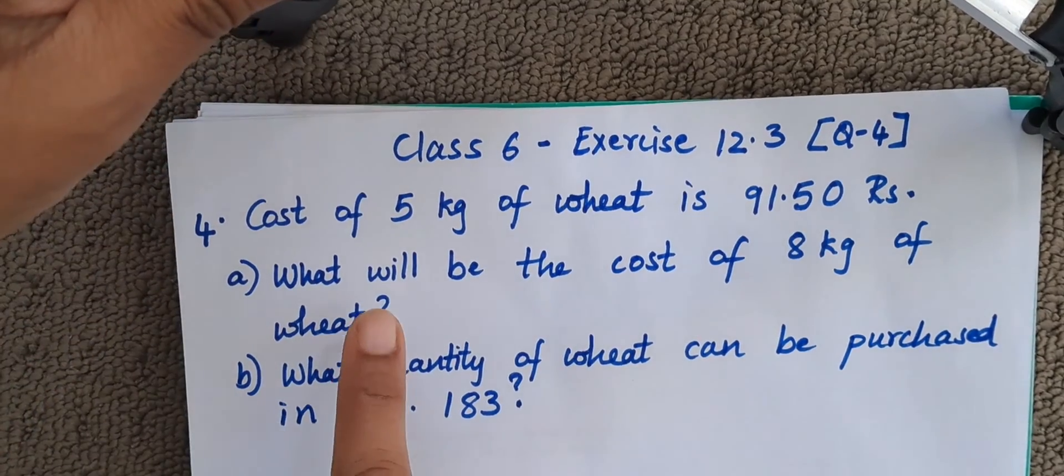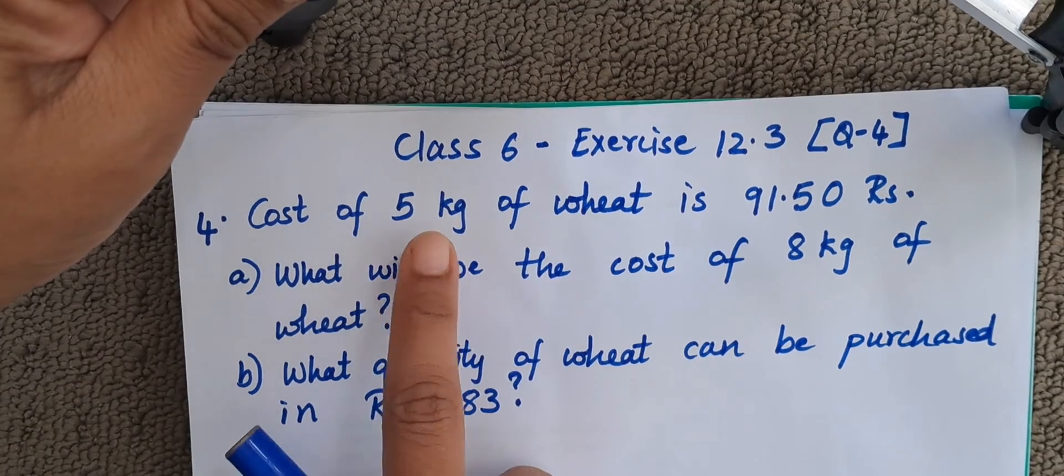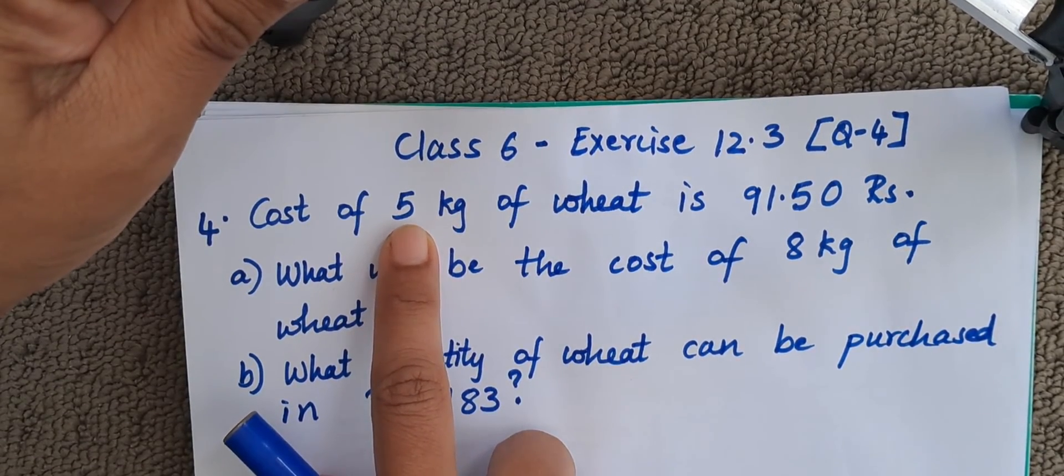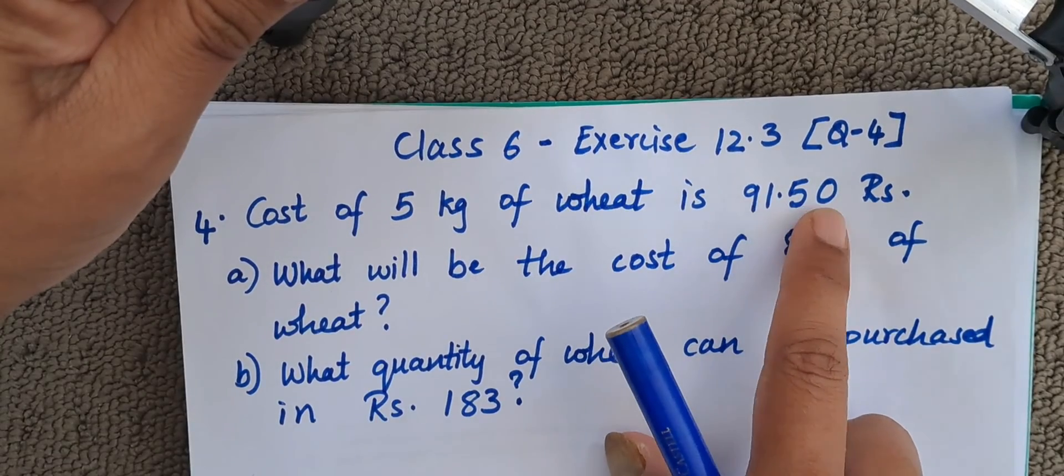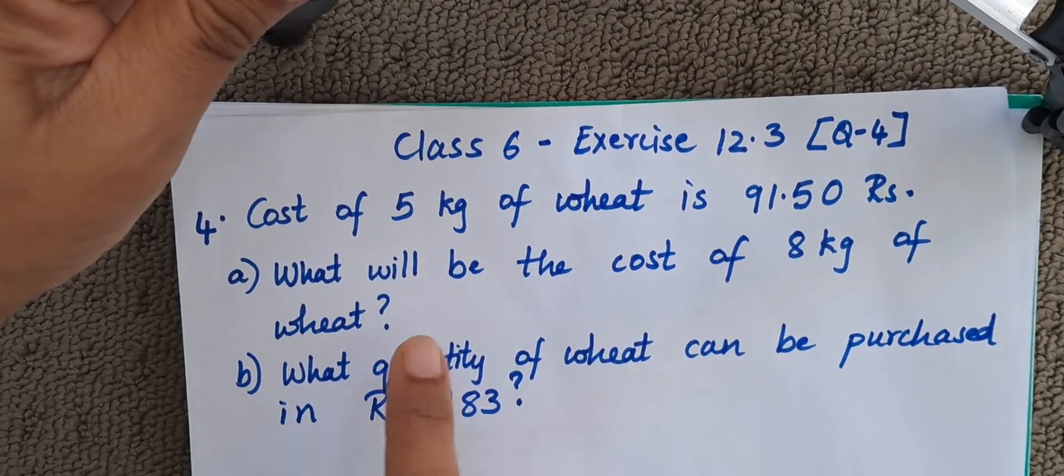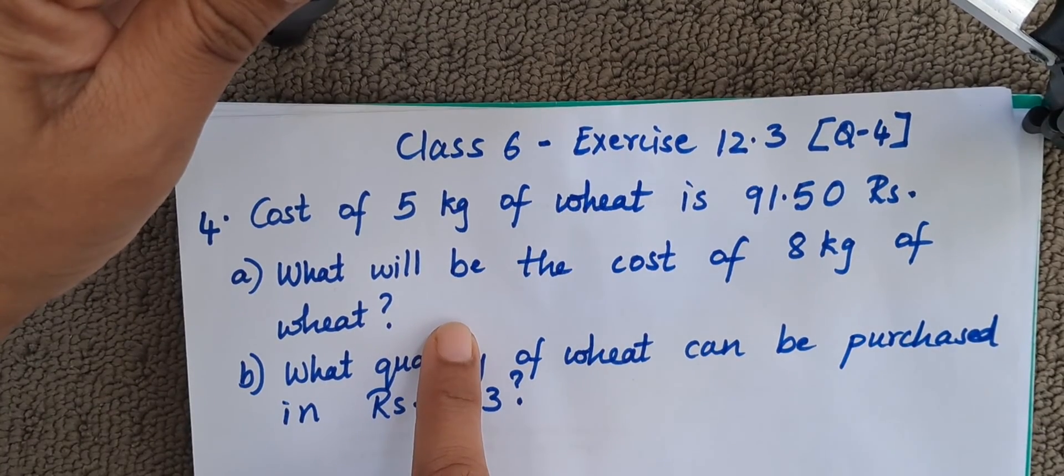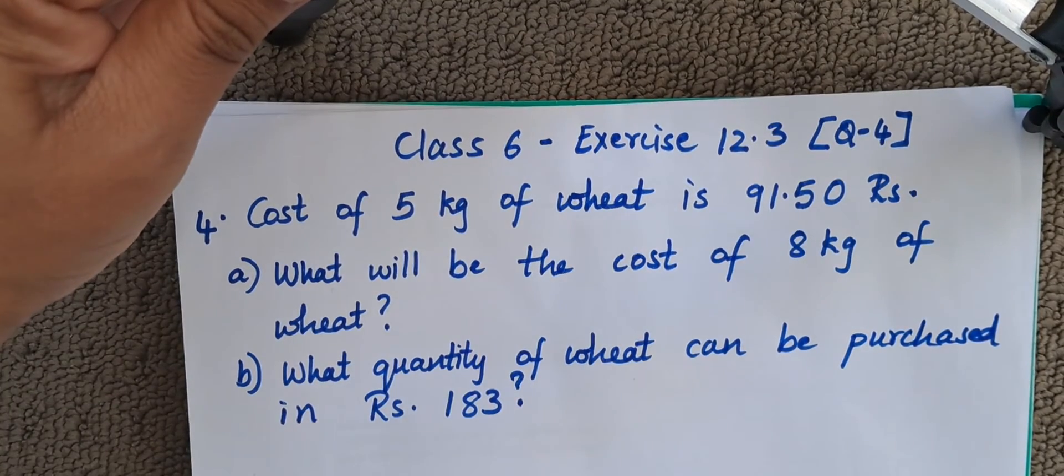Today I am going to show you all a very simple trick when two parameters are given. See for example here, 5 kg of wheat is costing 91.5 rupees. So 8 kg of wheat will cost how much? That is the question. Now, let us see how much it will cost.